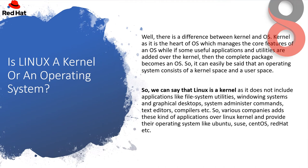So is Linux a kernel or an operating system? There's a difference between a kernel and an OS. The kernel is the heart of the OS which manages its core features, while if useful applications and utilities are added over the kernel, then the complete package becomes an OS. An operating system consists of a kernel space and a user space. Linux is technically a kernel, as it does not include applications like file system utilities, windowing systems, graphical desktops, system administrator commands, text editors, or compilers. Various companies add these applications over the Linux kernel to provide operating systems like Ubuntu, OpenSUSE, CentOS, Red Hat, etc.